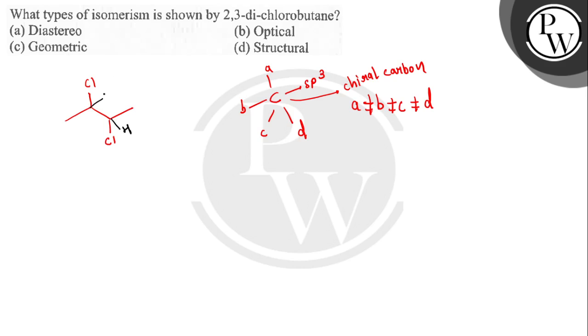Similarly, this carbon also contains hydrogen, chlorine, methyl, and one other unit. So basically, both of these carbons are chiral centers because they contain 4 different units with sp3 hybridization.